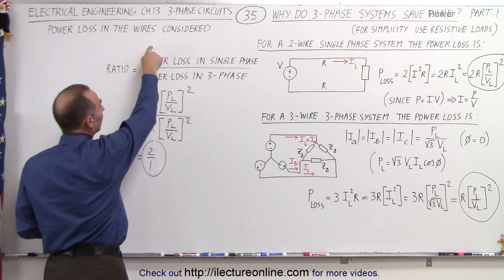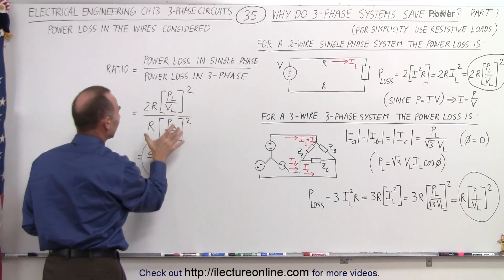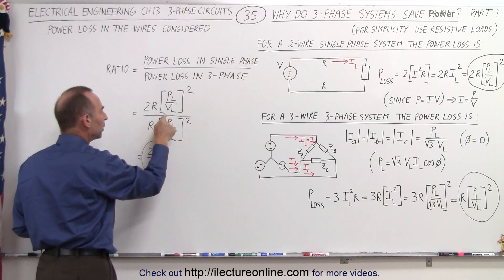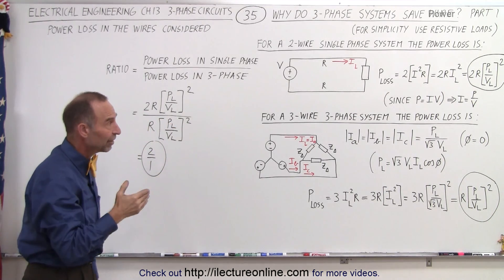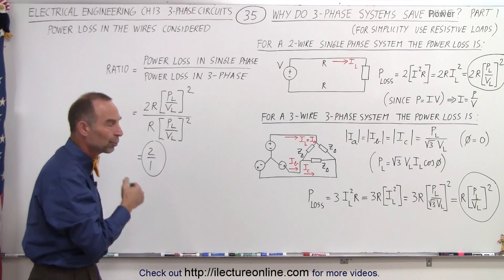It is two times R, P over V squared divided by one times R, P over V squared. In other words, the power loss in a single-phase system is twice as high as the power loss in a three-phase system.